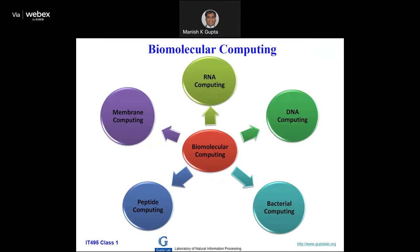Membrane computing and peptide computing are mainly theoretical. People interested in compiler construction, formal languages find them interesting. When you do a lot of theory, people don't know how to generate money out of it. Whereas RNA computing, DNA computing, and bacterial computing are more application-oriented — people have done experiments here. RNA is a wonderful, beautiful molecule, and just recently the world celebrated RNA Day. People say that life started from RNA, and DNA is used as a storage medium by nature. All the information about who you are is recorded in DNA.